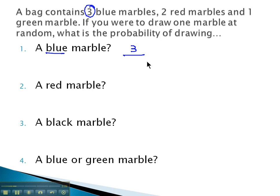Over in the denominator, we're going to put how many are possible. Well, there's 3 blue marbles, 2 red marbles, and 1 green marble, and so if we add that up, we're going to get a total of 6 possible marbles. And so the probability of getting a blue marble is 3 out of 6, which reduces to 1 half. There's a 1 in 2 chance that we're going to get a blue marble.